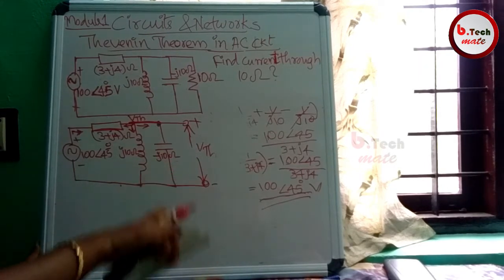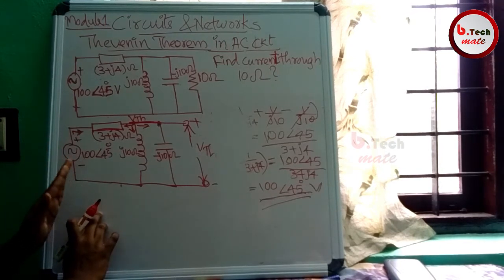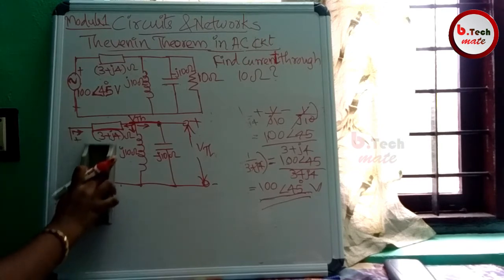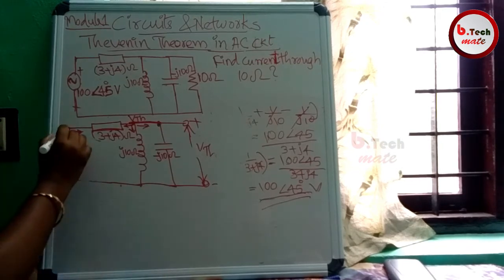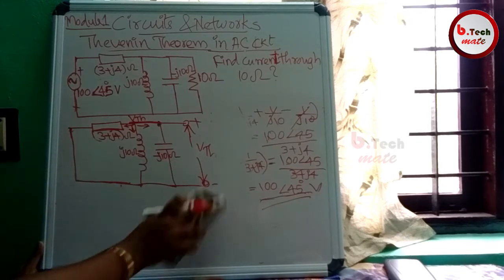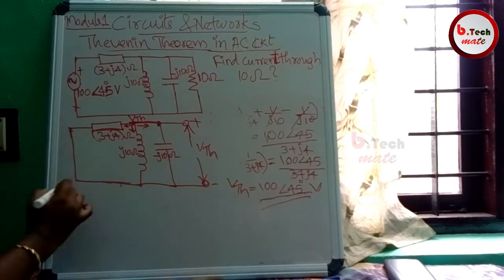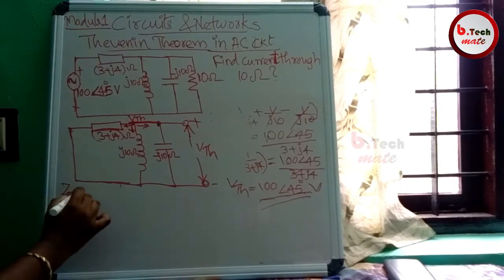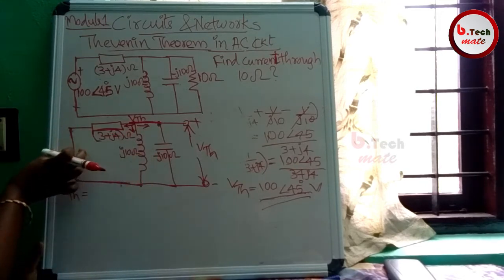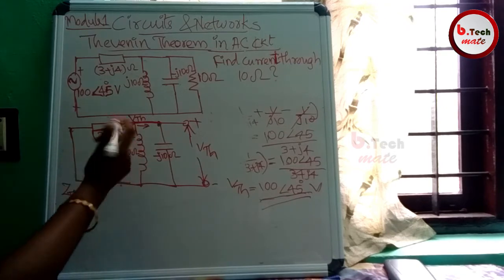Next step for ZTH: in this circuit, deactivate independent sources. This VTH voltage source is shorted. The current source is open. Then 3 plus J4 will be in parallel.